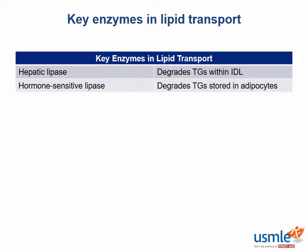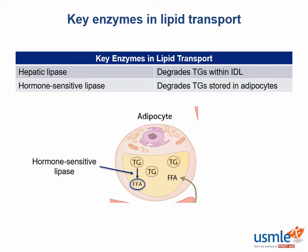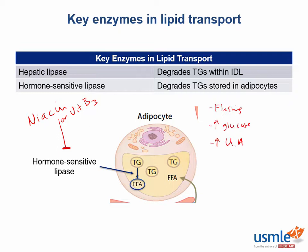Next up we have hormone-sensitive lipase. This is an intracellular enzyme found mostly within adipocytes and works to degrade triglycerides stored within the adipocyte. The lipid-lowering agent that inhibits this enzyme is niacin, or vitamin B3. Common side effects of niacin include flushing, hyperglycemia, and hyperuricemia.